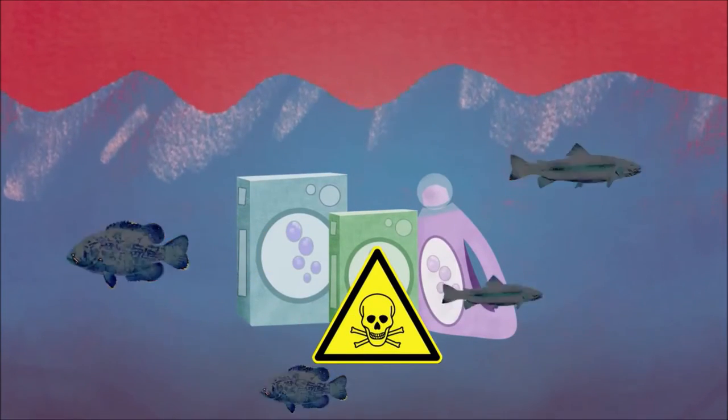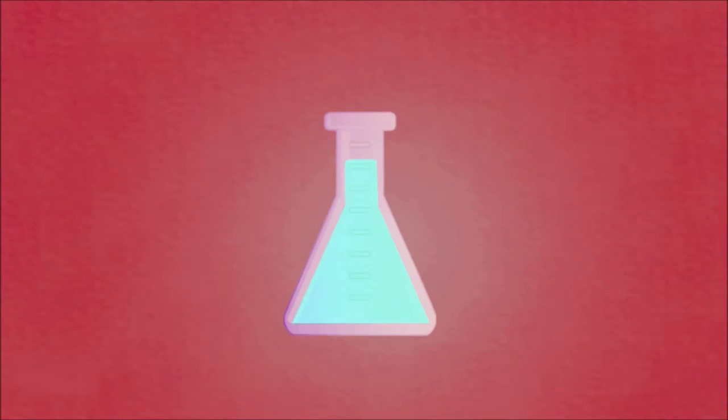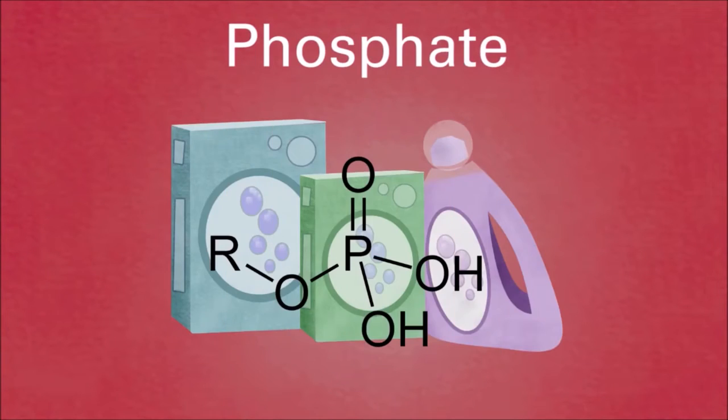An answer is that the chemicals found in detergents are toxic to aquatic organisms. One such chemical is phosphate, found in many washing powders, and this causes eutrophication.